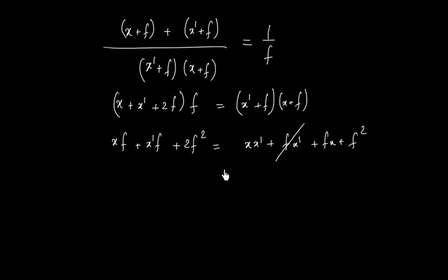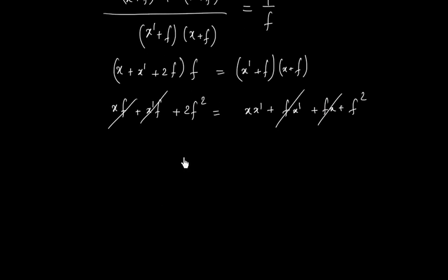So X dash, X dash cancels, XF, XF cancels, 2F squared minus F squared equals X times X dash.